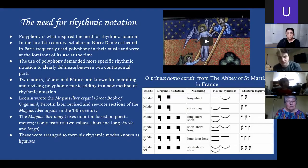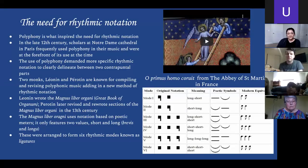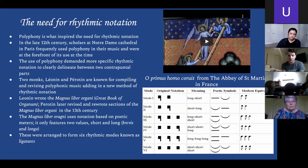In the late 12th century, scholars at Notre Dame Cathedral in Paris frequently used polyphony in their music and were at the forefront of its use at the time. The use of polyphony demanded more specific rhythmic notation to clearly delineate between two contrapuntal parts — they had to be able to work together. Two monks, Leonin and Perotin, are known for compiling and revising polyphonic music, adding a new method of rhythmic notation. Leonin wrote the Magnus Liber Organi, or the Great Book of Organum, and Perotin later revised and rewrote sections of it in the 13th century. The Magnus Liber Organi uses notation based on poetic meters, featuring only two values: short and long — brevis and longa — arranged to form six rhythmic modes known as ligatures.